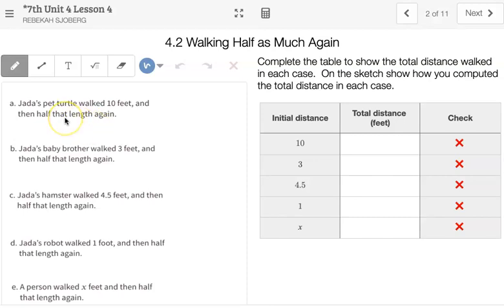So the first one is Jada's pet turtle walked 10 feet and then half that length again. Might think she walks 10 and then half of 10 is 5, so 10 plus 5 is 15. For her baby brother, he goes 3 feet and then half of that again. So 3 plus half of 3, which is 1 and a half, so he walks 4.5 feet.